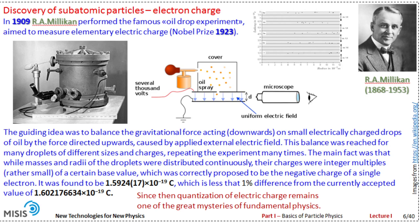This is less than one percent different from the modern accepted value of electron charge — a remarkable accuracy. What is also remarkable is that since then the fact that the charge of the electron and all other particles is quantized has remained one of the great mysteries of fundamental physics. We have many ideas why it should be this way, but still no clear proof of which idea about charge quantization is realized in nature, and we have no theory which allows us to compute the electric charge from first principles or express it in terms of other physical constants.